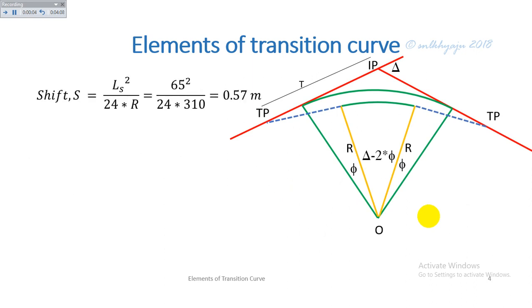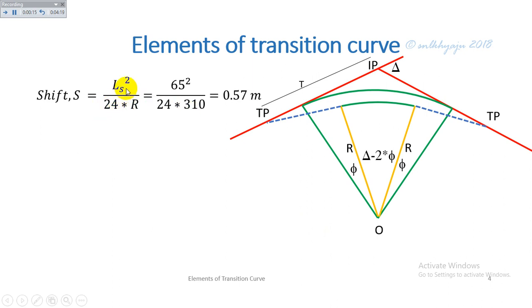Now for the given question: the length of the transition curve L is 65 meters and the radius of the circular curve R is 210 meters. The shift is calculated from the relation S = L² / 24R and is calculated as 0.57 meters.